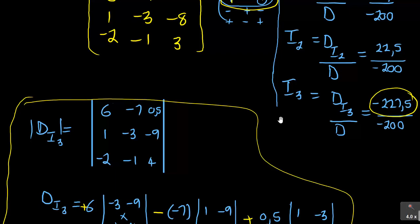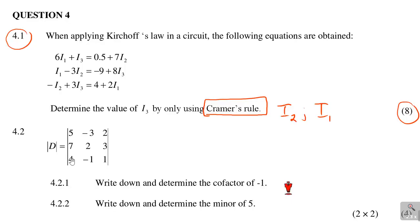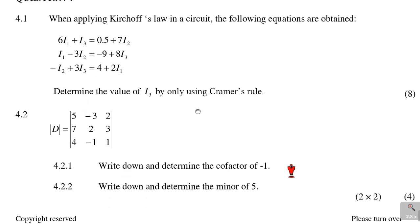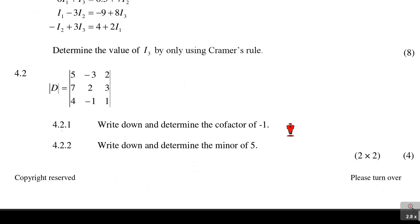We've come to the end of the Cramer's Rule section. Watch out for lesson parts two and three where I'll cover similar methods for simultaneous equations. There is also question 4.2 which asks us to find the cofactor and minor of elements in a given matrix — let me work through that now.